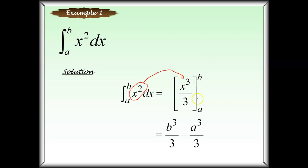For this output, put a bracket and write down the definite limits from a to b. Remember, a is the smallest and b is the biggest. So you write x³/3 with bracket from a to b, which means you are going to substitute the values of a and b into this function.